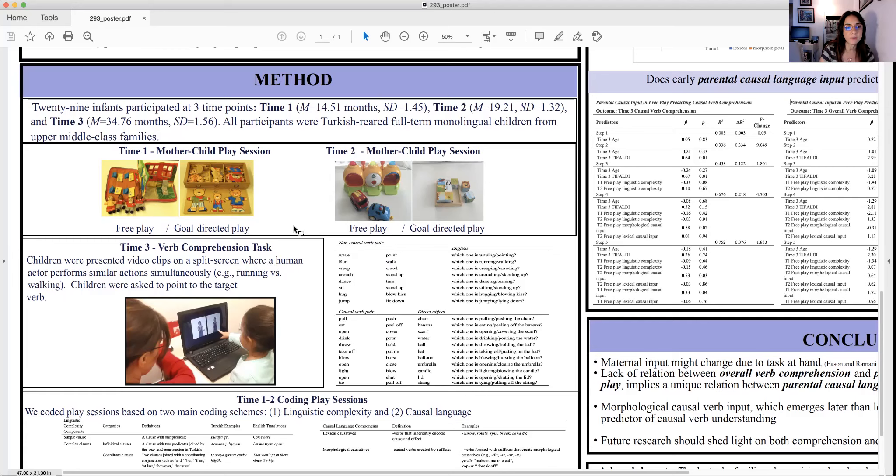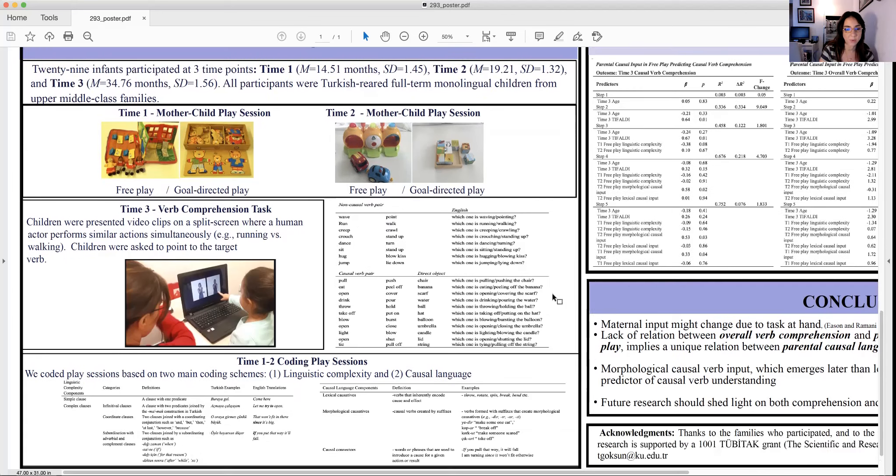And for time three, verb comprehension tasks: children were presented video clips on a split screen where human actors perform similar actions simultaneously. Which one is running? The child pointed as seen in the picture. There are non-causal verb pairs like run, walk, creep, crawl, crouch, stand up, dance, turn, sing, hug, and jump. And there are also causal verb pairs like pull and push, eat and peel off, open and cover types of questions.